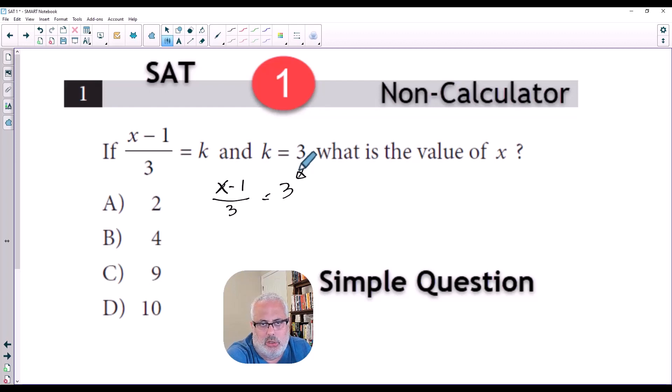That you know that in order to answer this, we need to isolate the X by canceling the other numbers with the inverse operations. So I multiply by 3 because the first inconvenient number here is the number 3 that is dividing and the inverse is multiplication.